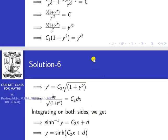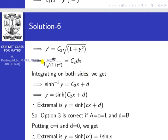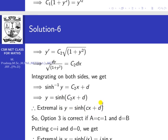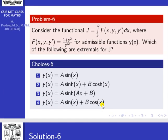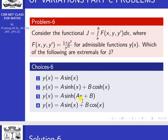So y' = c₂ times √(1 + y²), where c₂ = √c₁ is a constant. That is, dy/dx = c₂√(1 + y²), so dy/√(1 + y²) = c₂ dx. Integrating both sides, the integral of dy/√(1 + y²) gives sinh⁻¹(y), equal to c₂x plus constant d. Therefore y = sinh(c₂x + d), so the extremal is y = sinh(cx + d).